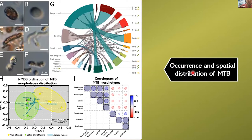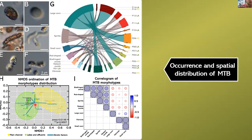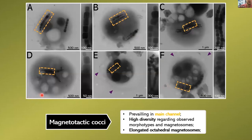When we understand this occurrence and spatial distribution, we find that the magnetotactic cocci are distributed majorly in the river main channel, while rods, spirilla, and vibrioids appear in green in the lakes and tributaries. A set of statistical analyses shows that some abiotic factors are important for driving this diversity, and there are clusters where organisms are proximal in morphology composition.